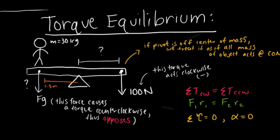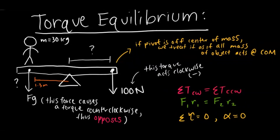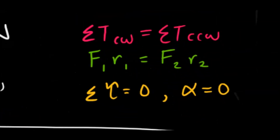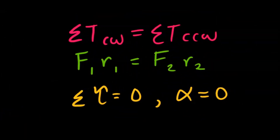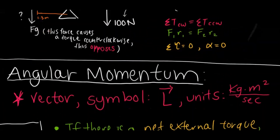For torques in equilibrium: consider a person standing on one side of a plank off its center of mass — all of the plank's mass acts at its center of mass. There is a 100-newton torque acting clockwise in this problem. The torque the person exerts is in the counterclockwise direction via the force of gravity, and the equation shows how these balance out.